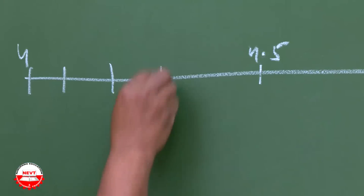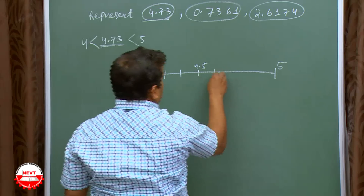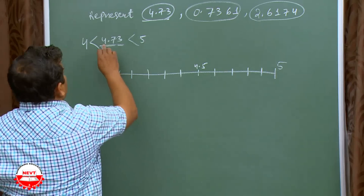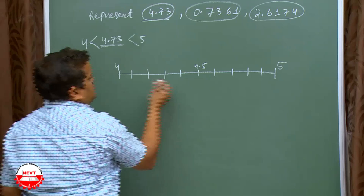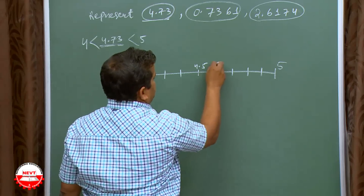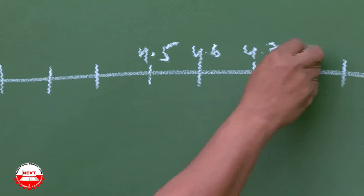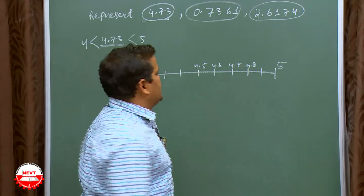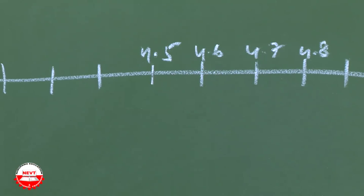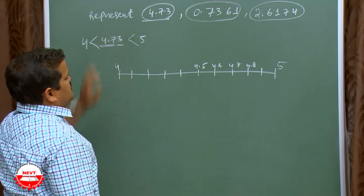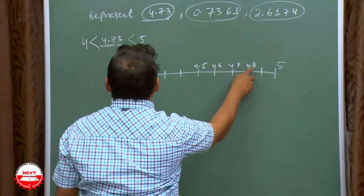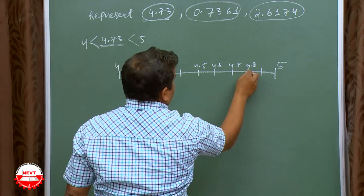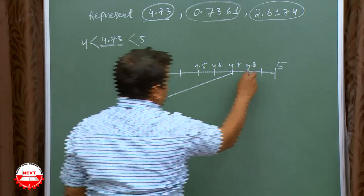Divide the number line into equal parts — 1, 2, 3, 4 — and make a number line first. Your aim is to show 4.7, so: 4.5, 4.6, 4.7, 4.8. This number lies between 4 and 5, so I am showing 4.7, but this number again lies between 4.7 and 4.8 because it is greater than 4.7. So you magnify this part.